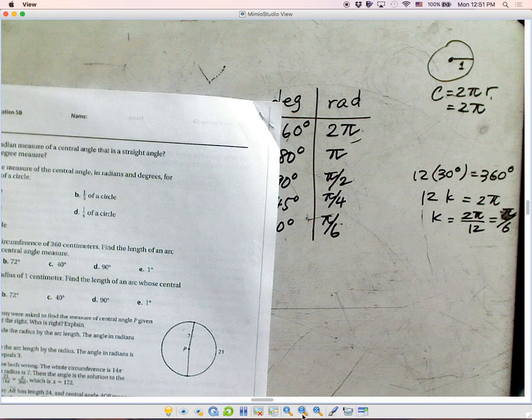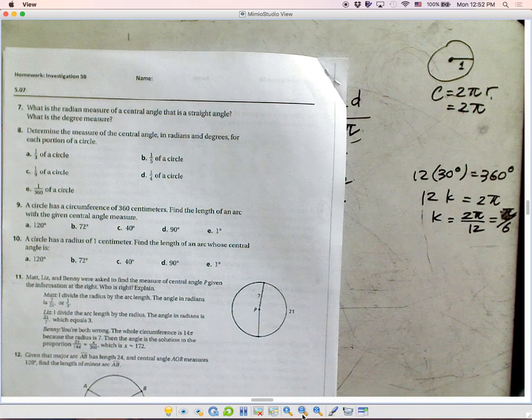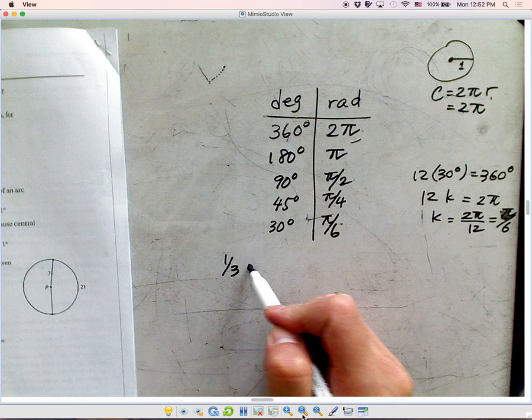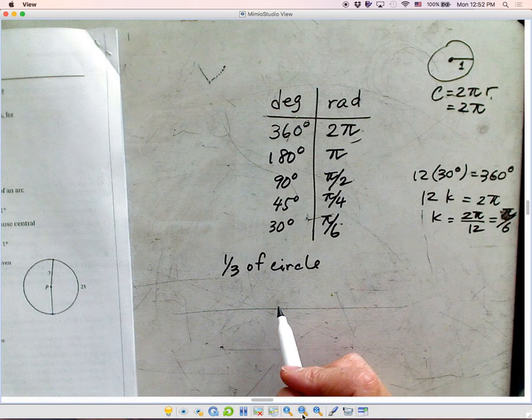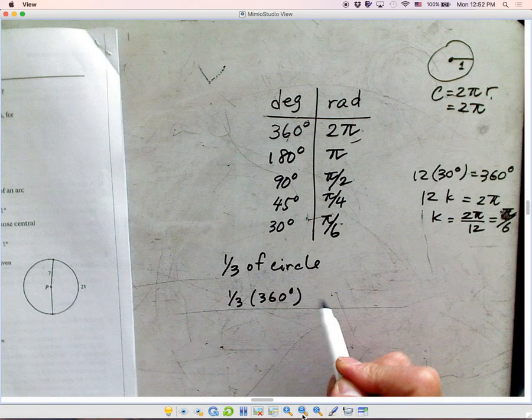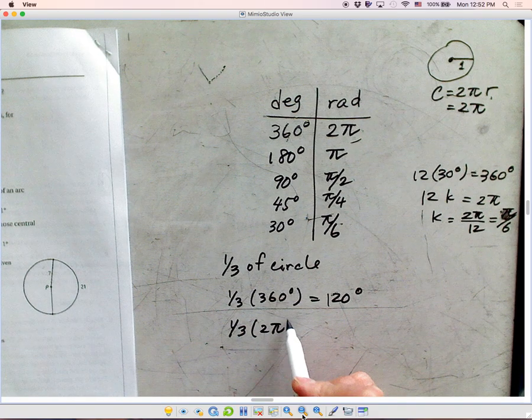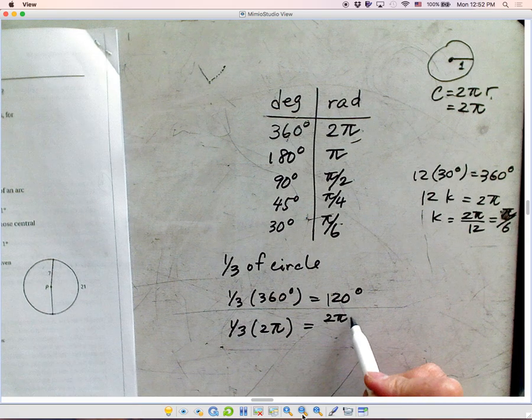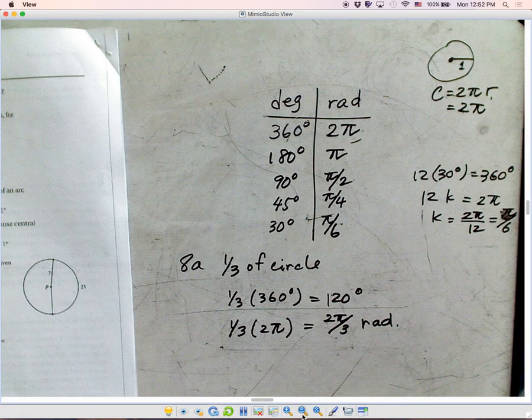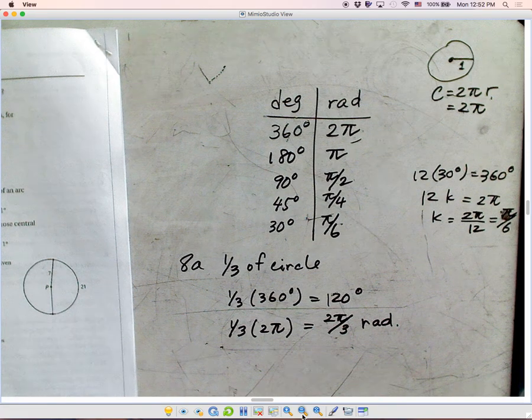Use that information to do number 8a. So let's do 8a. It says 1 third of circle. How many degrees is that? Well, full circle is 360. What's 1 third of 360 degrees? That's 120 degrees. How about 1 third of 2π in radian? Well, that is 2π over 3 radian. So I'll use this as a hint to do the rest of the problem.